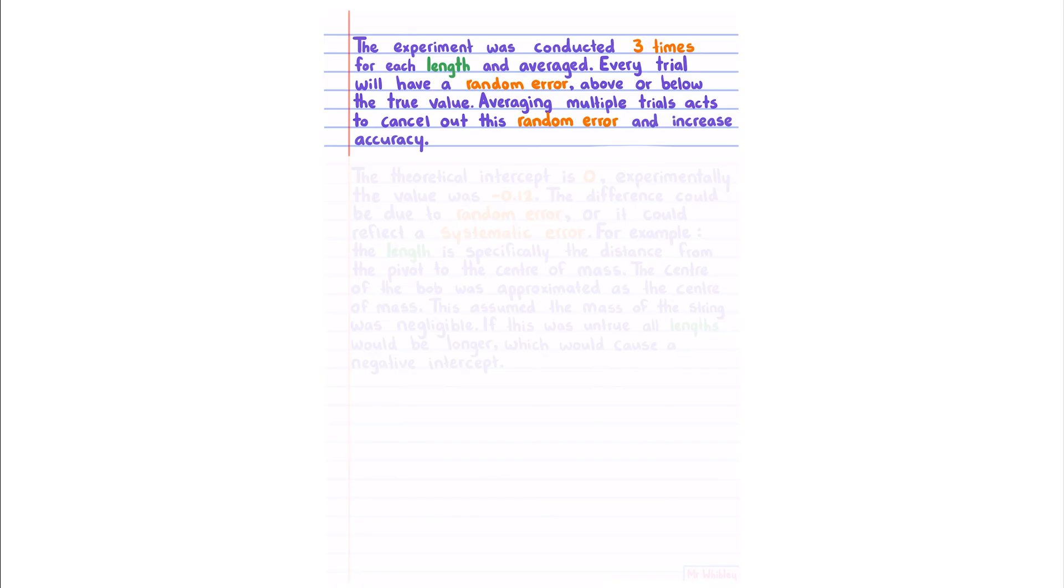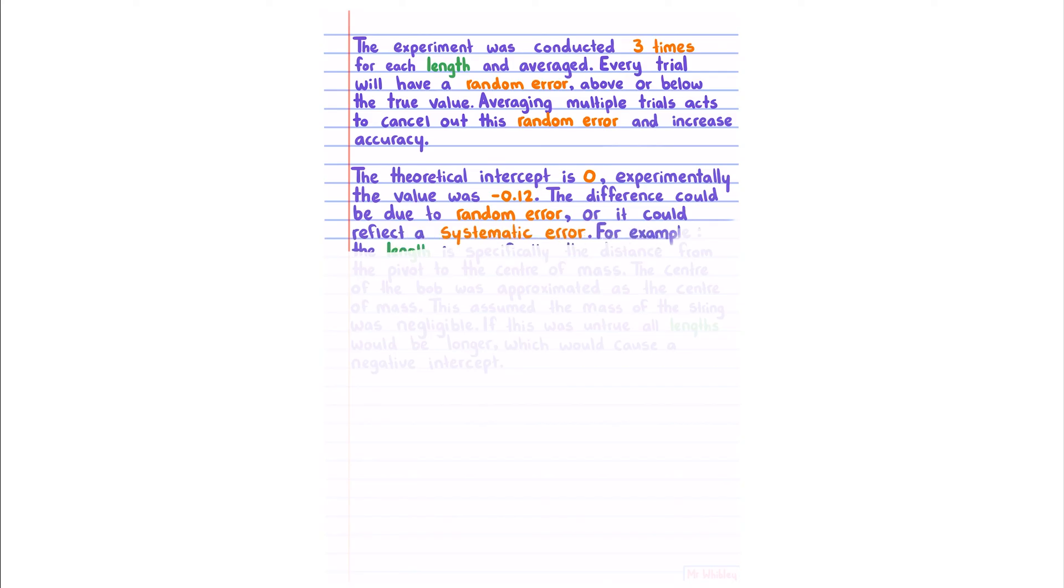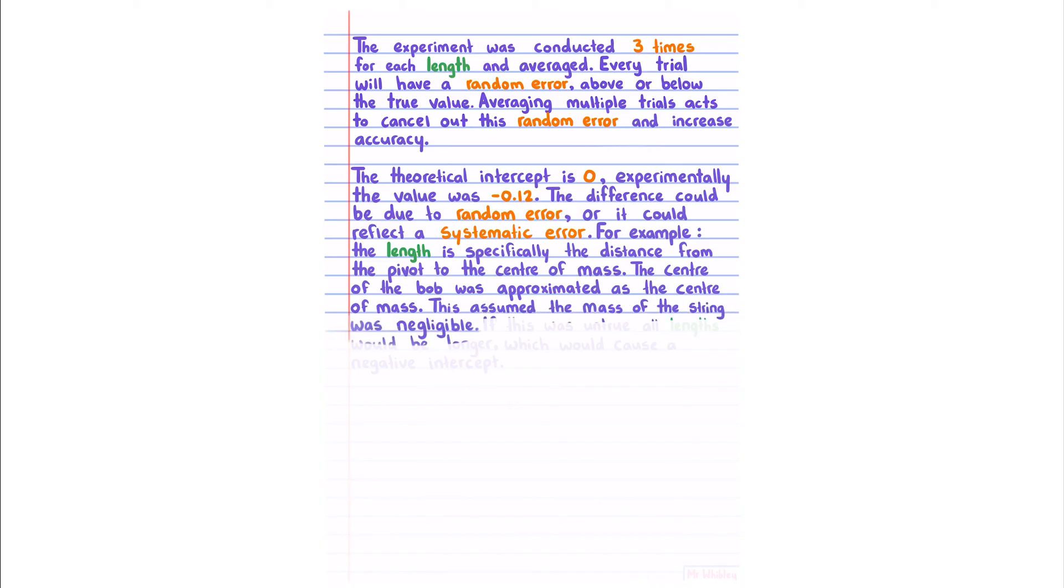Finally, we'll talk about how we got a non-zero intercept when theoretically our intercept should have been zero. The theoretical intercept is zero. Experimentally, the value was negative 0.12. The difference could be due to random error or it could reflect a systematic error. For example, the length is specifically the distance from the pivot to the center of mass. The center of the bob was approximated as the center of mass. This assumed that the mass of the string was negligible. If this was untrue, all lengths would be longer, which would cause a negative intercept.